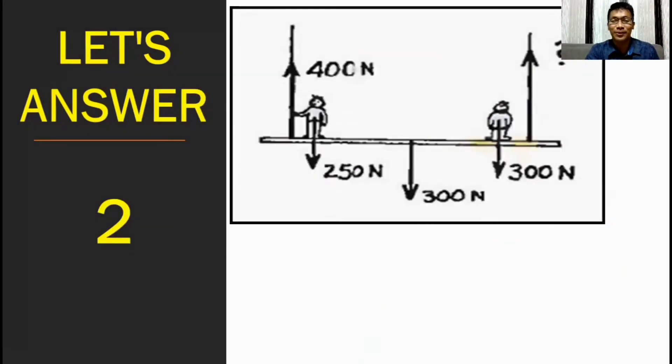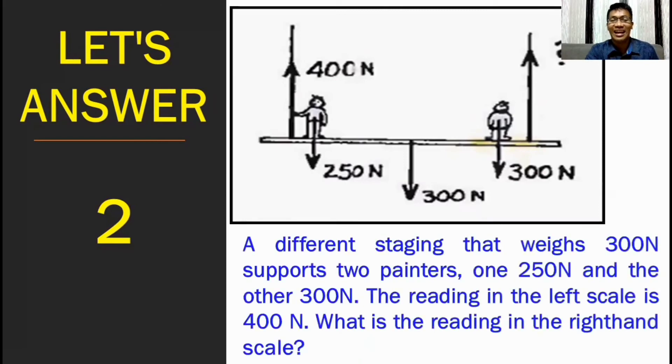Let's answer number 2. A different staging that weighs 300 newton supports two painters. One, 250 newton and the other, 300 newton. The reading in the left scale is 400 newton. What is the reading in the right-hand scale? Let's try to analyze further this illustration. We have seen that there are three arrows going down.